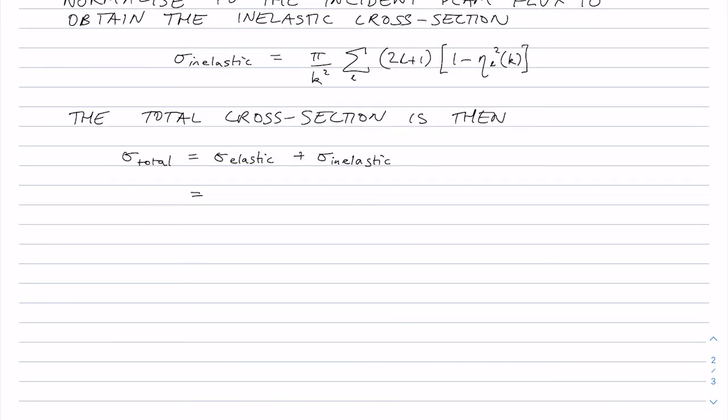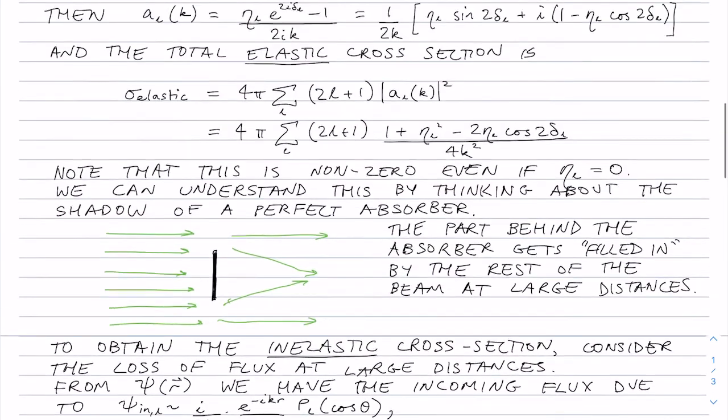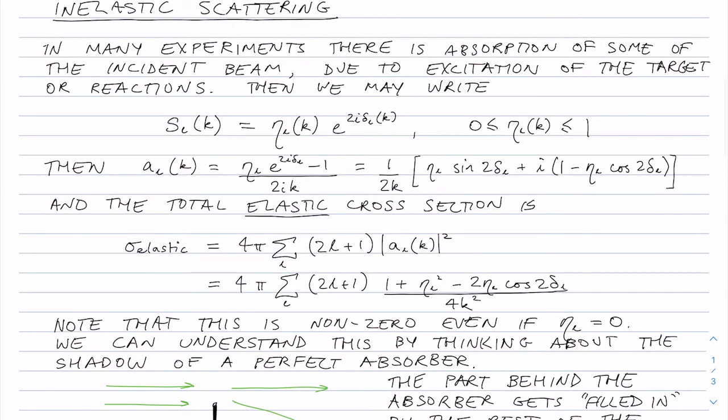So if I add the two together, I will end up with the eta L squared term cancels out. But this 1 minus 2 eta L is actually the same as this factor here, the imaginary part of A_L k. This is 1 over 2 k i times 1 minus eta cos 2 delta.